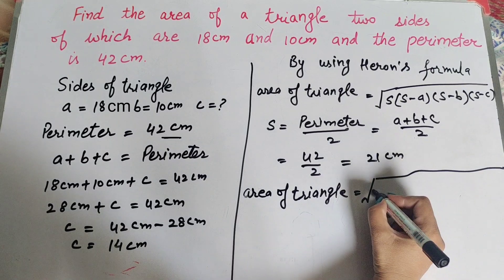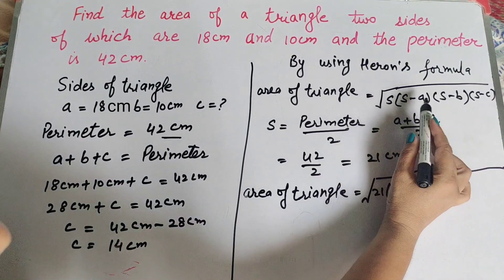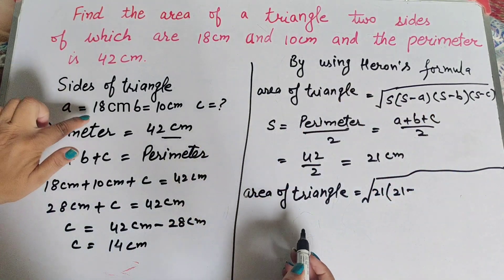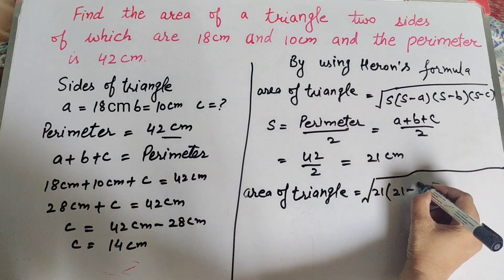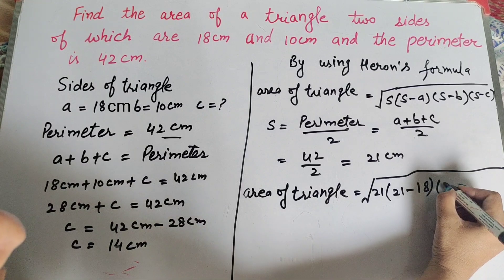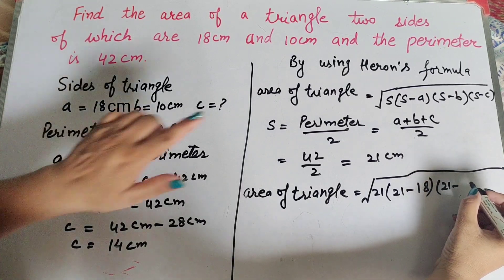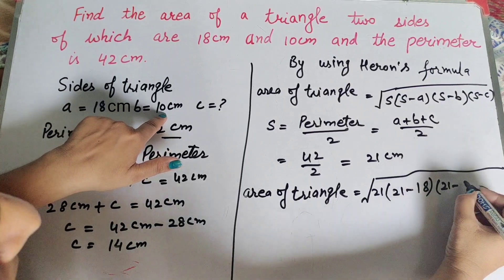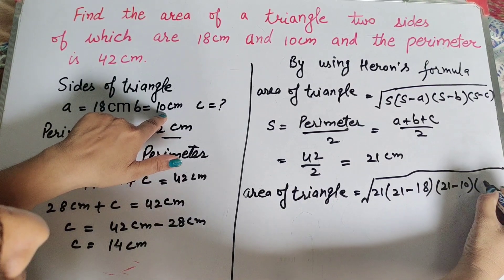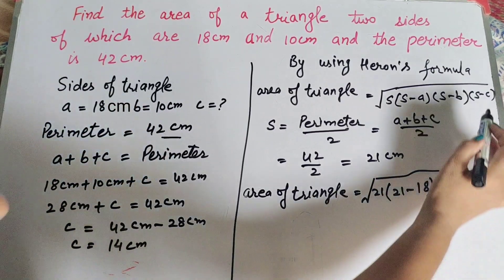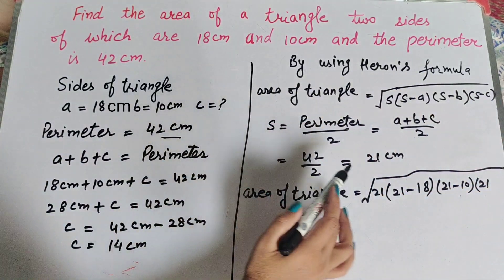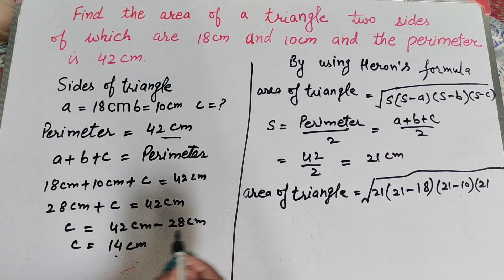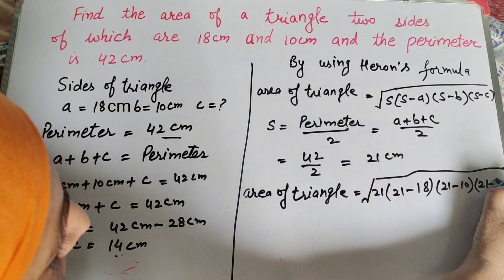Now we put in the values. s equals 21 cm. So we compute: 21 into (s minus a) — that is 21 minus 18 — into (s minus b) — s equals 21 and b equals 10 cm, so 21 minus 10 — into (s minus c) — s equals 21 and c equals 14 cm, so 21 minus 14.